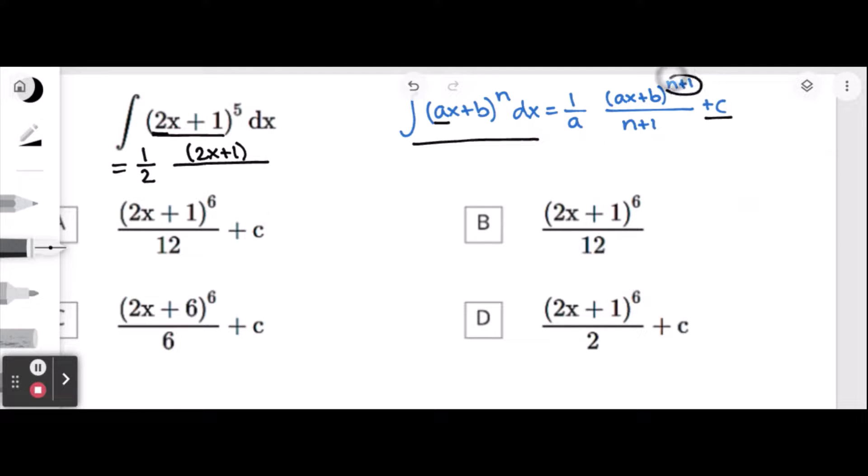Then, as you can see here, we need to add 1 to the power. So 5 plus 1 equals 6. Then over the power, which is 6.